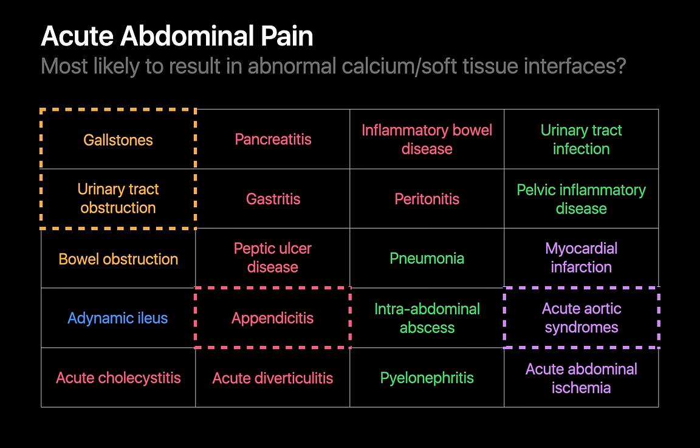While not every gallstone, urinary tract calculus, or appendicolith is calcified or symptomatic, seeing a calcification pattern typical for a gallstone, urinary tract calculus, or appendicolith may reasonably warrant further diagnostic workup for obstructing gallstones, acute cholecystitis, urinary tract obstruction, or acute appendicitis. Likewise, while not every calcified abdominal aortic aneurysm is acutely symptomatic, seeing a calcification pattern typical of an abdominal aortic aneurysm could warrant further workup for an acute aortic syndrome in a patient with acute abdominal pain.